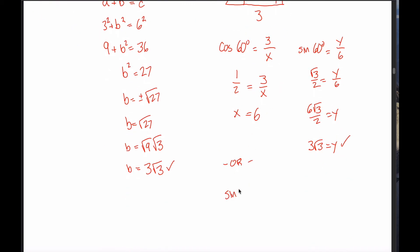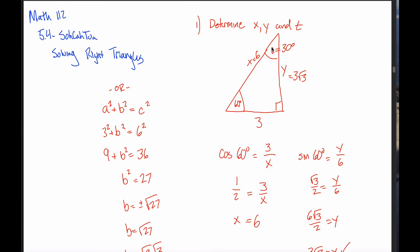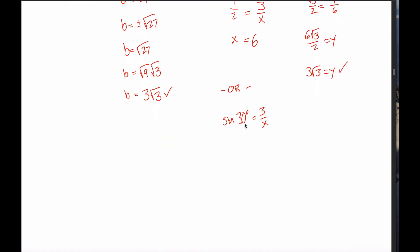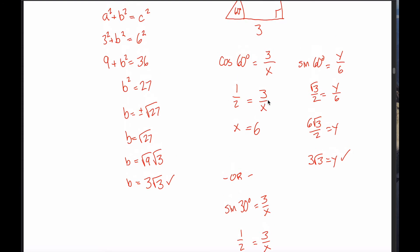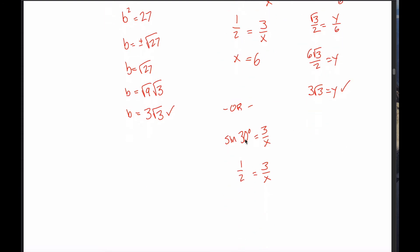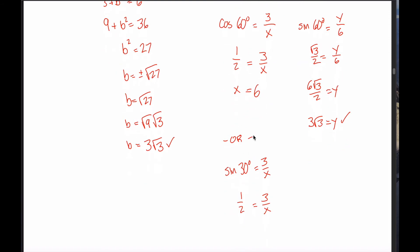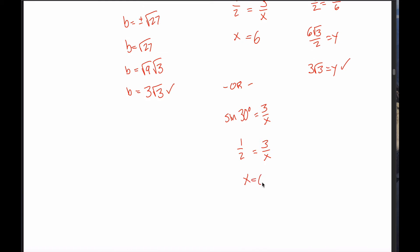I could say the sine of 30 degrees equals — relative to the 30 degree angle — opposite over hypotenuse: 3 divided by x. The sine of 30 degrees is 1 half, so 1 half equals 3 over x. That's the same equation I got using cosine of 60 degrees. The cosine of 60 degrees is the same as the sine of 30 degrees. Either way, I get 1 half equals 3 over x, and I can solve to get x equals 6.